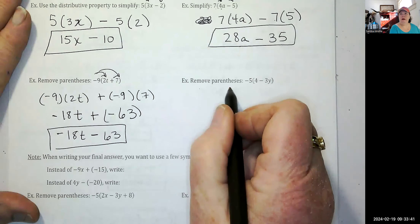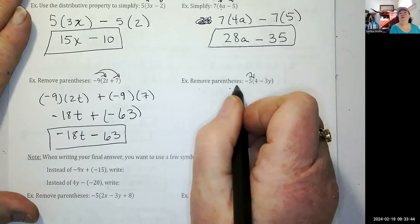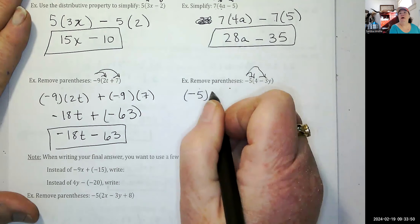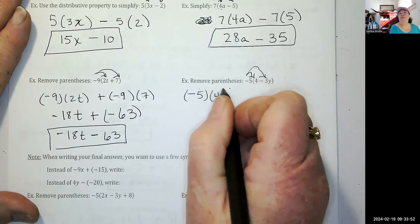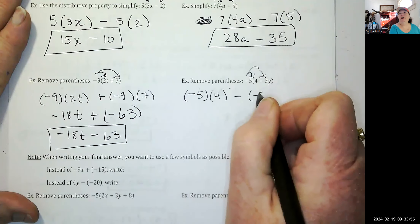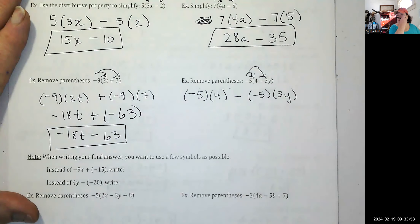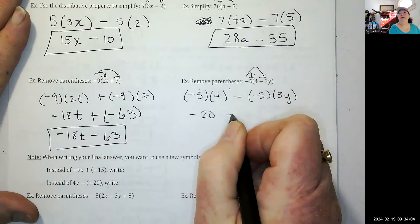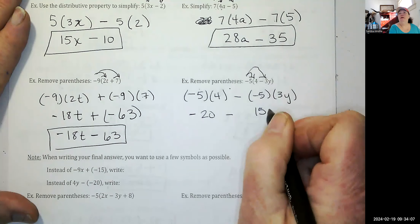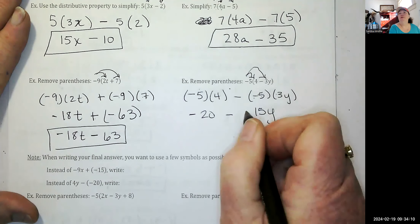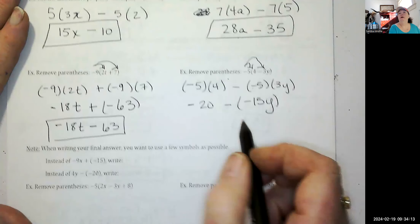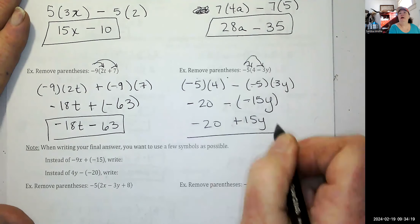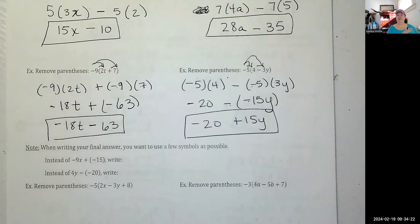Remove parentheses: negative five times the quantity 4 minus 3y. Negative five times 4 — signs are different, so negative 20. Minus negative five times 3y: five times three is 15, signs are different so negative, but then we have a minus negative which becomes positive. Cleaning it up: you cannot have two signs next to each other, so the answer is negative 20 plus 15y.